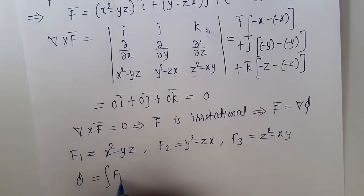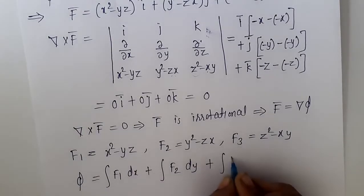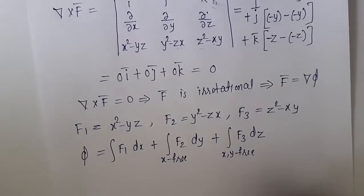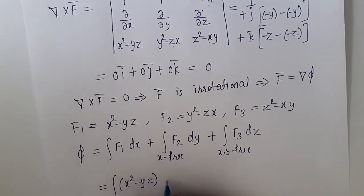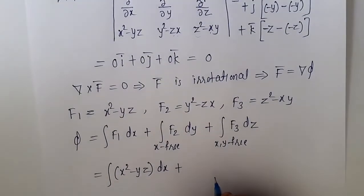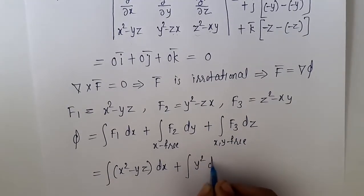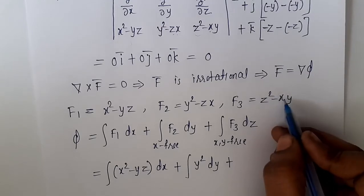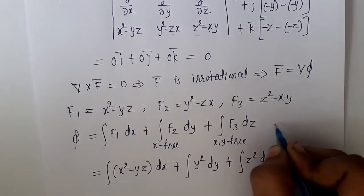φ is given as: integral of f1 dx plus integral of f2 dy plus integral of f3 dz. For f2 it must be free from x, and for f3 it must be free from x and y. So we integrate the whole term (x² - yz) dx; for f2 we exclude the -zx term and write only y²·dy; and for f3 the xy term is excluded, so we write only z²·dz, plus a constant of integration.